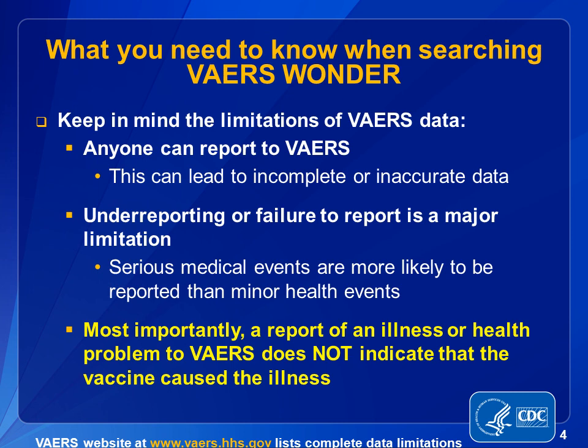VAERS cannot determine cause and effect. The report of an adverse event to VAERS does not indicate that a vaccine caused the event. It only indicates that the event occurred sometime after vaccine was given. No proof that the event was caused by the vaccine is required in order for VAERS to accept the report. VAERS accepts all reports without judging whether or not the event was caused by the vaccine. More information on the limits of VAERS data can be found on the VAERS website at www.vaers.hhs.gov. Remember, the report of an adverse event to VAERS does not indicate that a vaccine caused the event — it only indicates that the health problem occurred sometime after the vaccine was received.